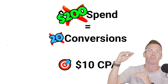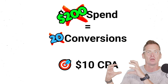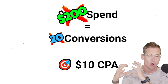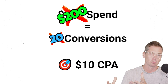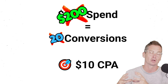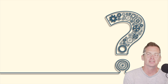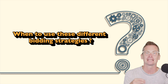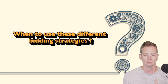When we move budget up, we are still getting the same results on a cost per acquisition or cost per conversion basis. So the biggest question is: when should you use these different bidding strategies? And I look at these like a tool.